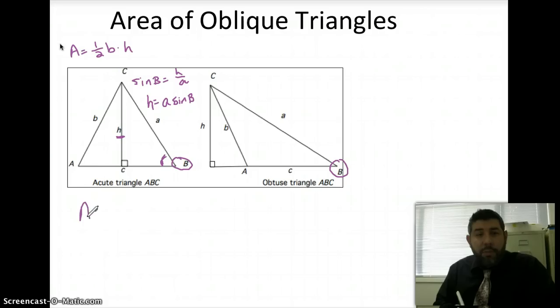So I'm just going to plug in one-half. Now the base, so I don't want to get confused here. Our base is C, all right? So this is the base. It's not actually side B. It's the base, which is side C. So here I'm going to have one-half C times H, and H is the height. And we found H to be A sine B.